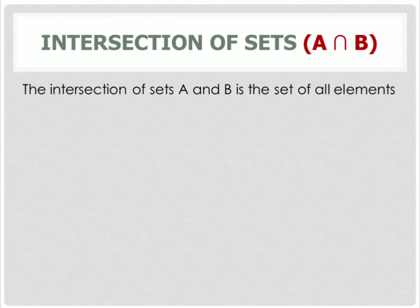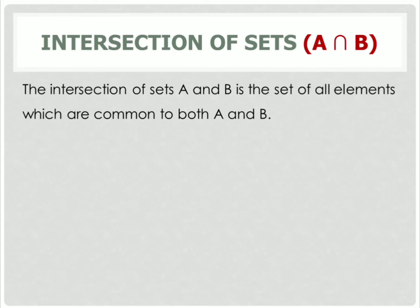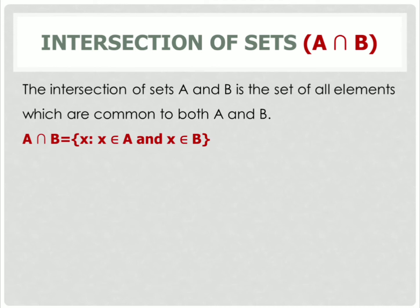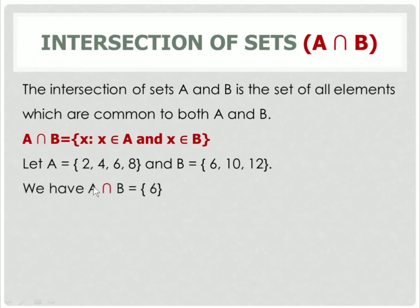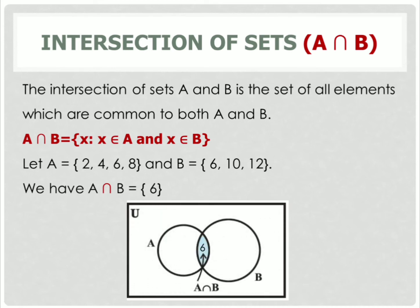Now, intersection of sets, represented by A ∩ B. The intersection of sets A and B is the set of all elements which are common in A and B. We represent it as A ∩ B = {x : x ∈ A and x ∈ B}. Take an example: if A = {2, 4, 6, 8} and B = {6, 10, 12}, then A ∩ B = {6}, which is the only element common in A and B. The overlapping portion in the Venn diagram is called A ∩ B.